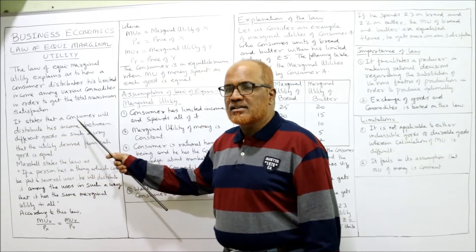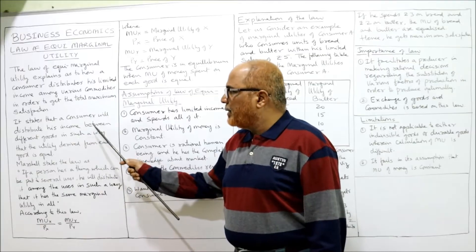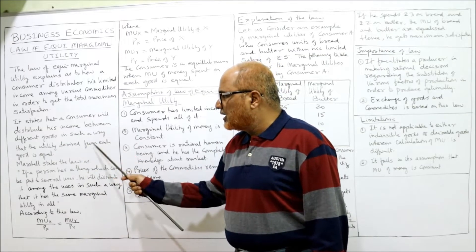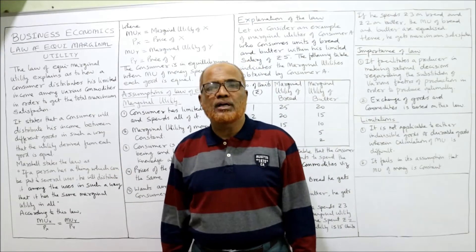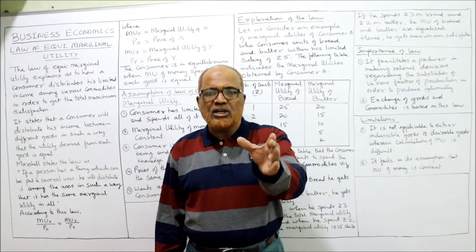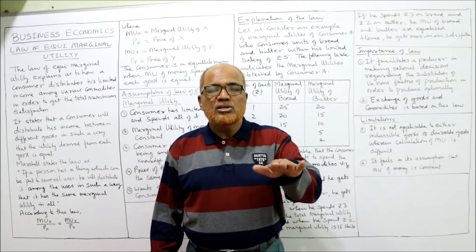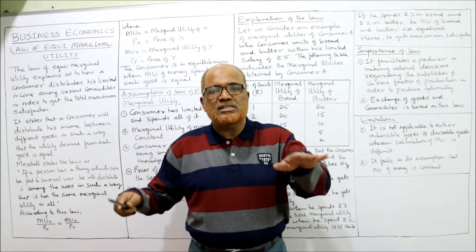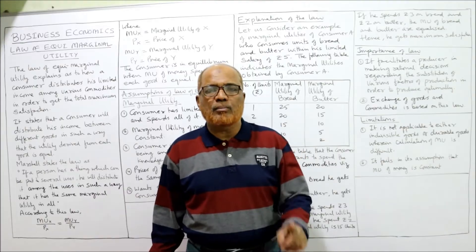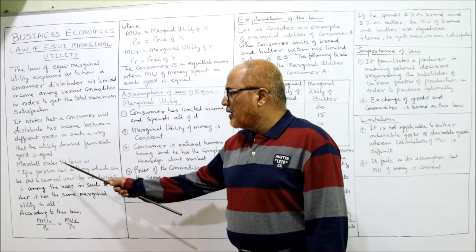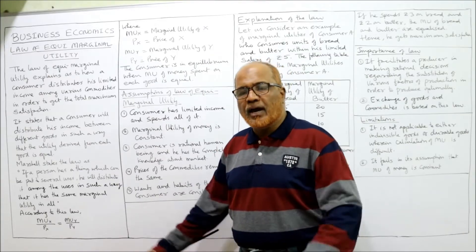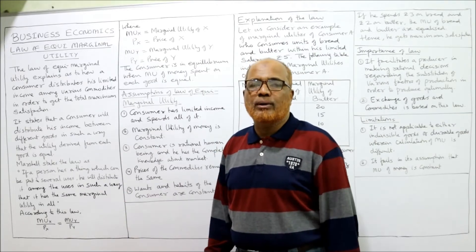The law states that a consumer will distribute his income between different goods in such a way that the utility derived from each good is equal. That means the marginal utility of each commodity must be equal. Alfred Marshall gave both the law of diminishing marginal utility and the law of equi-marginal utility.